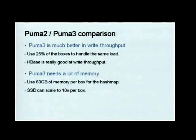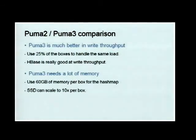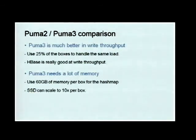Puma3's problem is it needs a lot of memory — it's an in-memory hash table. We use 60 gigabytes of memory per box for the hash map. To scale that up, we are thinking about using SSD, which can be around 600 gigabytes per box, which we think is probably good enough.